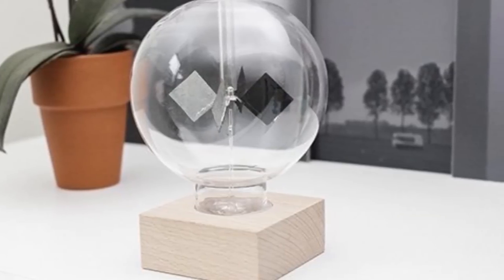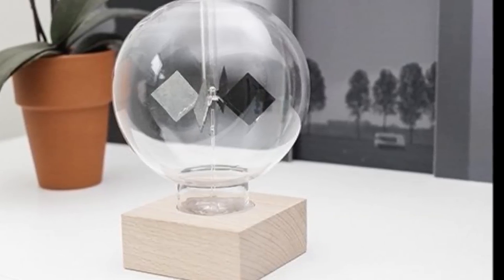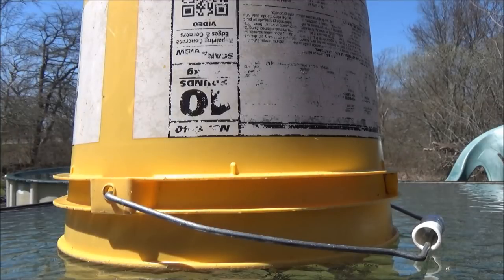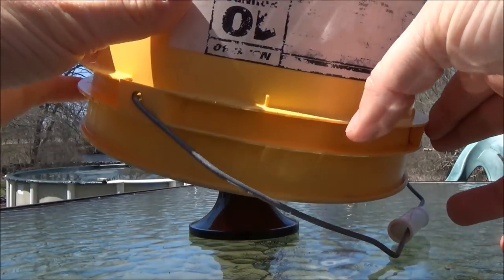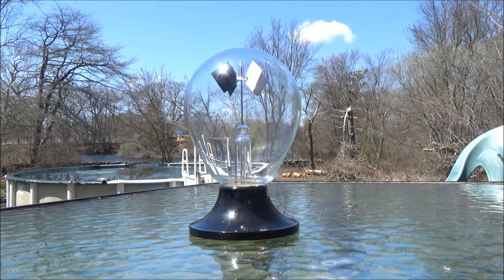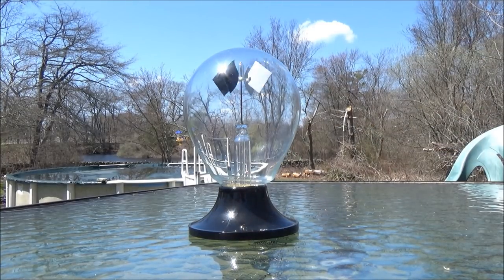In the very center of the radiometer there's a needle, and on the very top of the needle are these four vanes all attached to one another. They're sitting on this needle so they can spin with very little friction. On one side of the vane is black and on the other side is white.